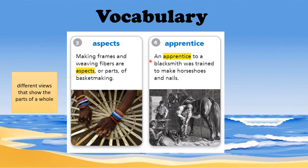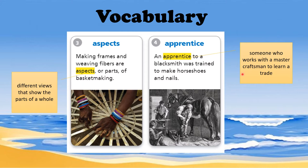Number four is apprentice. An apprentice to a blacksmith was trained to make horseshoes and nails. The clue is someone who was trained, like a student. An apprentice is someone who works with a master craftsman to learn a trade. Apprentices can come from all walks of life — for example, the apprentice to a teacher is a student.